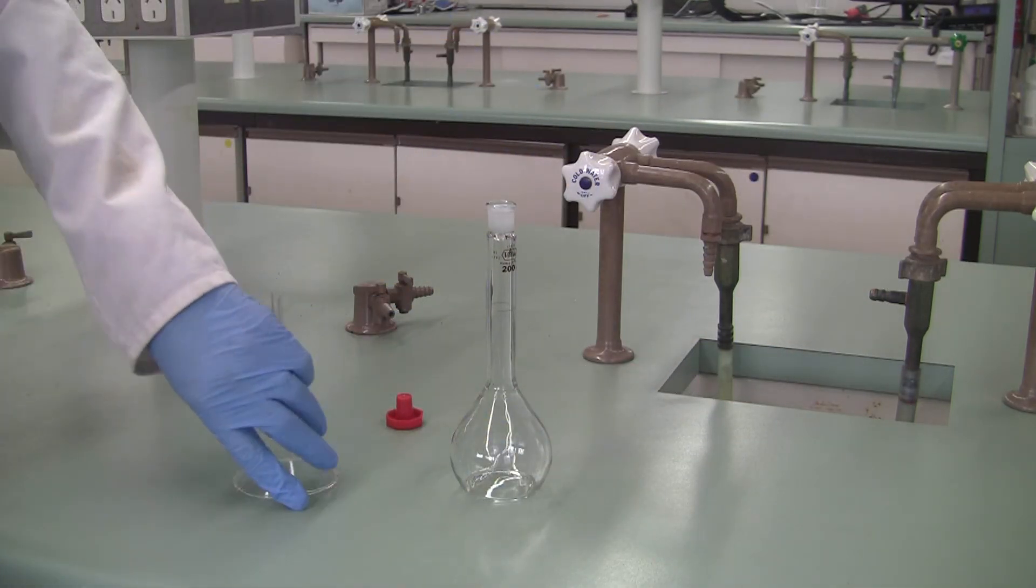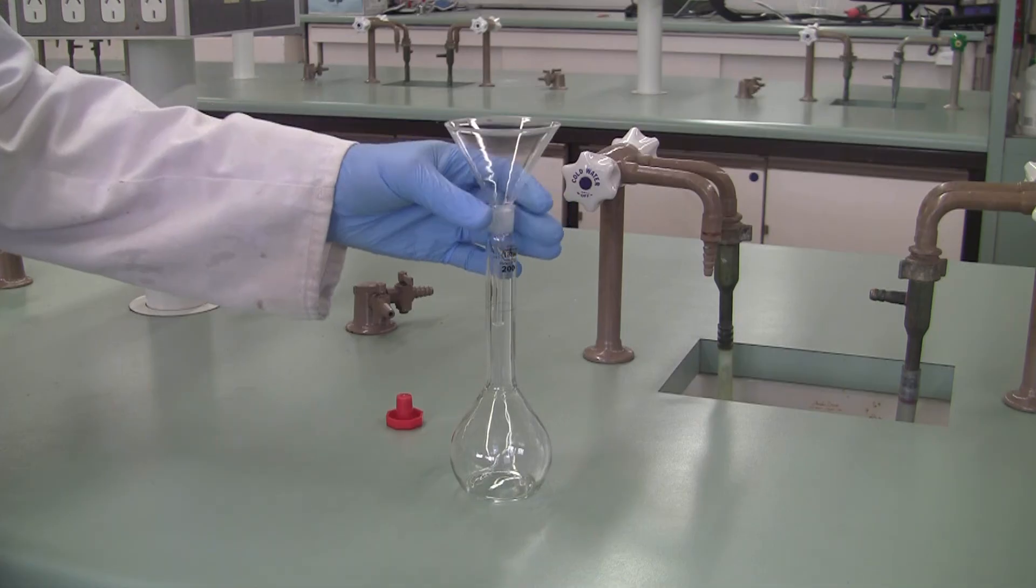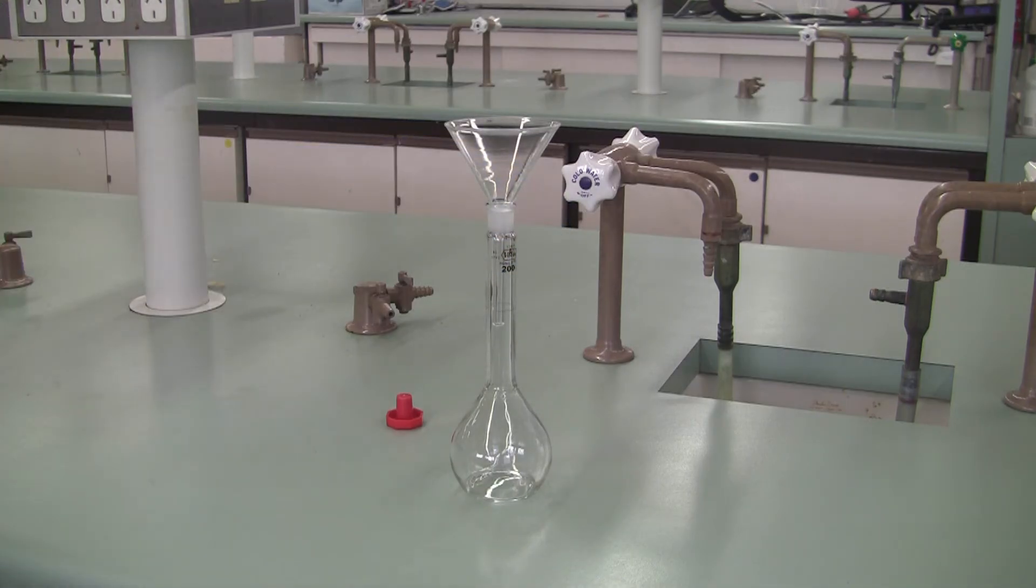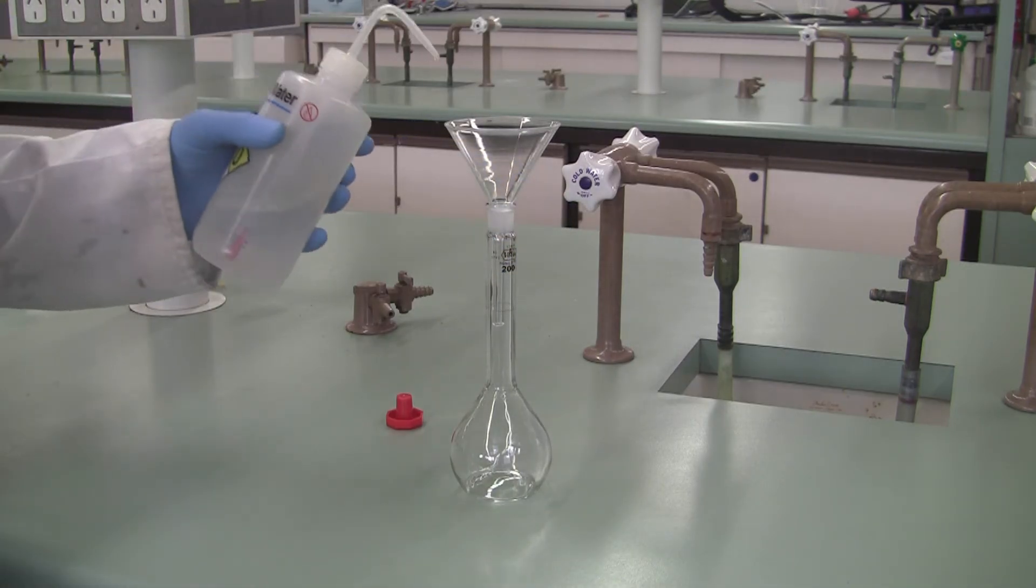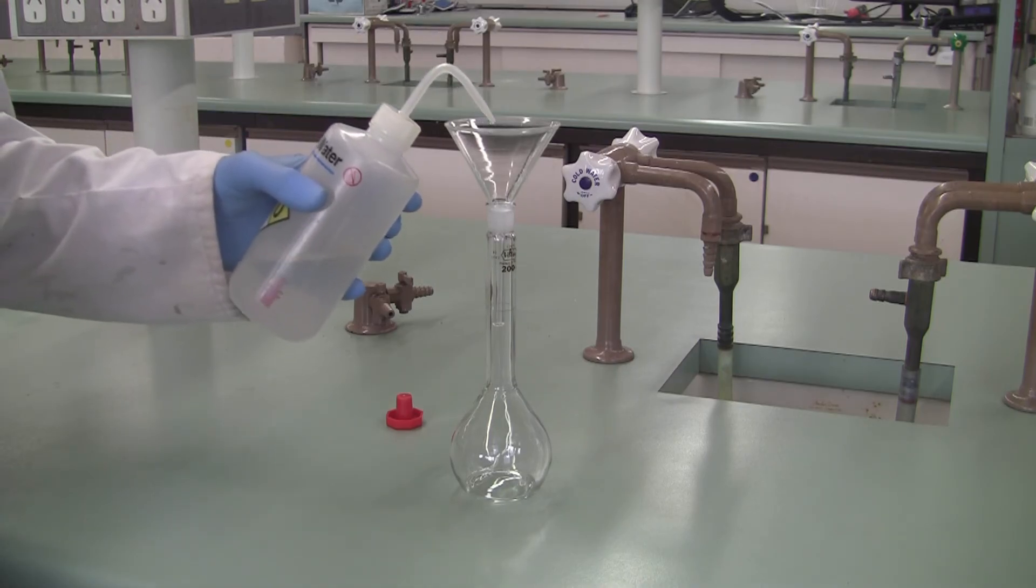If you need to transfer the mass into a standard flask or something with a narrower neck, you can use a glass funnel. Afterwards, use your wash bottle or solvent to rinse all the solid into the flask.